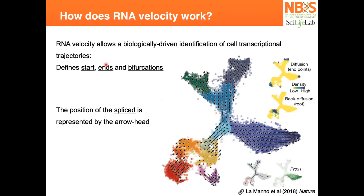Comparing to other trajectory methods, RNA velocity now allows a biologically driven identification of transitional and transcriptional trajectories. Previously, you would fit your model trajectory to your data but had to manually point out the start. Now, since we have identification of unspliced to spliced versions, you can create diffusion endpoints or the root — because the root will always have more unspliced transcripts than spliced. The endpoints will have mostly the spliced version, making it easier to define start, end, and bifurcation points.